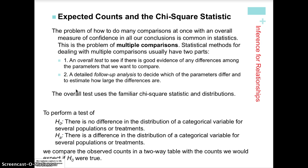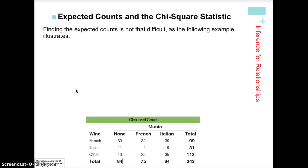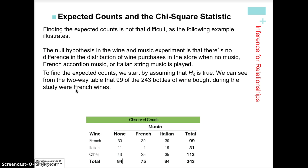Our hypotheses are: the null hypothesis states there is no difference in the distribution of a categorical variable for several populations or treatments. In our wine example, there is no difference in the type of wine purchased depending on which type of music is playing. The alternative hypothesis is that there is a difference — there is an impact from the music playing. We put our observed counts in a two-way table, then calculate our expected values.